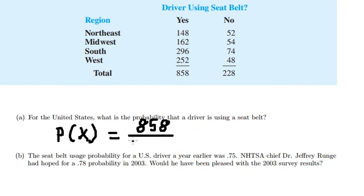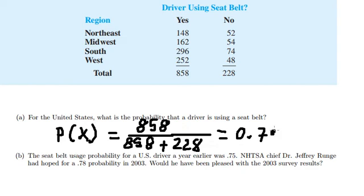So we put this number in here. Let's do that. We divide by the total drivers. 858 plus 228. We calculate this one and we have 0.79. And that is the answer for question A.